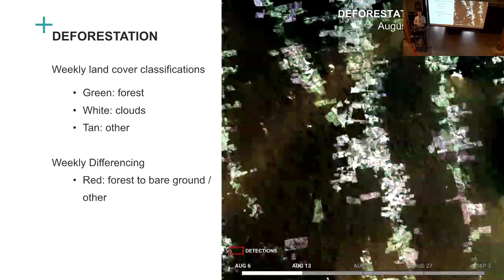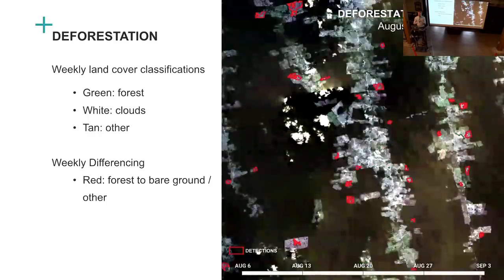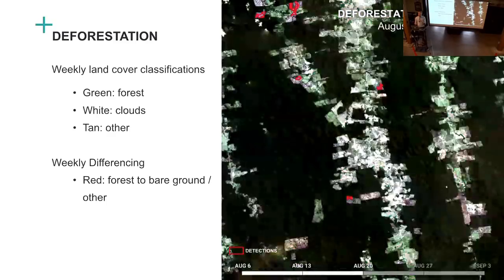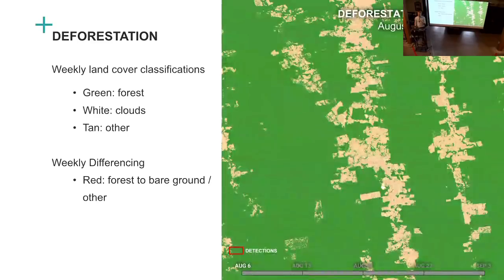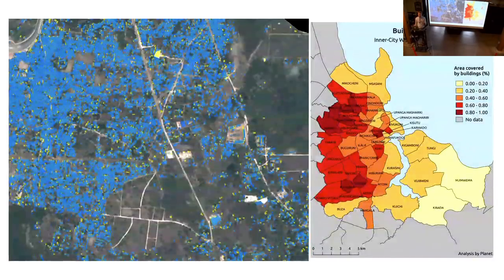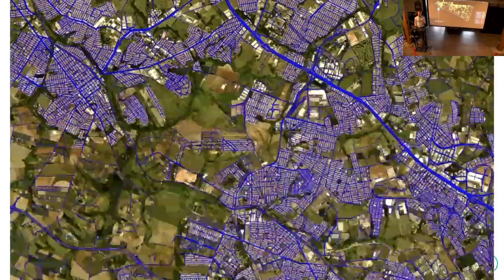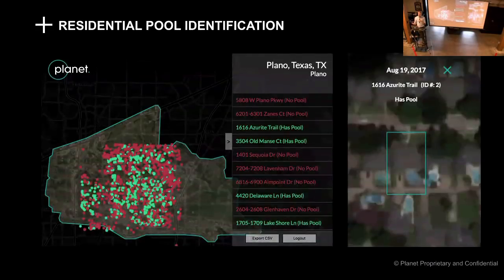Land use classification uses image segmentation deep learning technologies. It's a three-class model, not super complex, but really quite powerful — especially if you run it weekly, so you can see the red being the change that's happening and identify what is forest and what is not forest. Similar techniques are used for buildings — this is a project to detect urban growth that we did with the World Bank in Tanzania to identify buildings automatically and see that growth and change. Road detection uses similar techniques, and there are more niche objects like oil well pads and rigs to determine where new infrastructure is coming in.